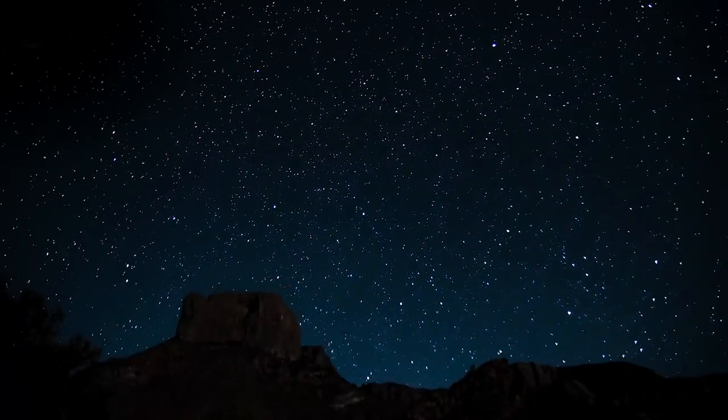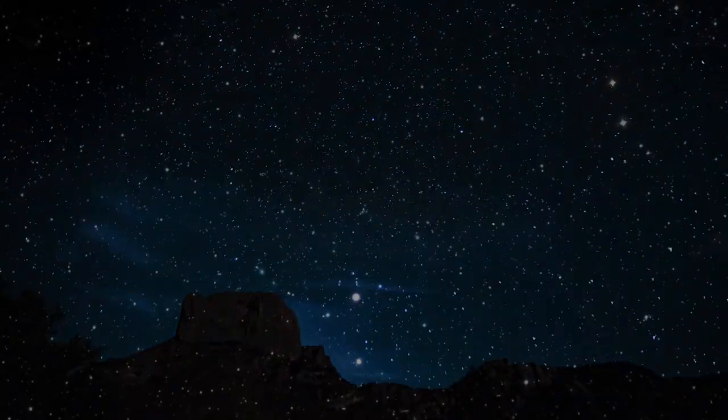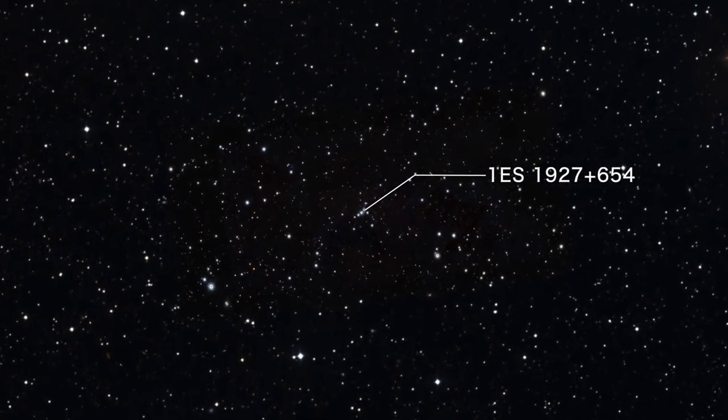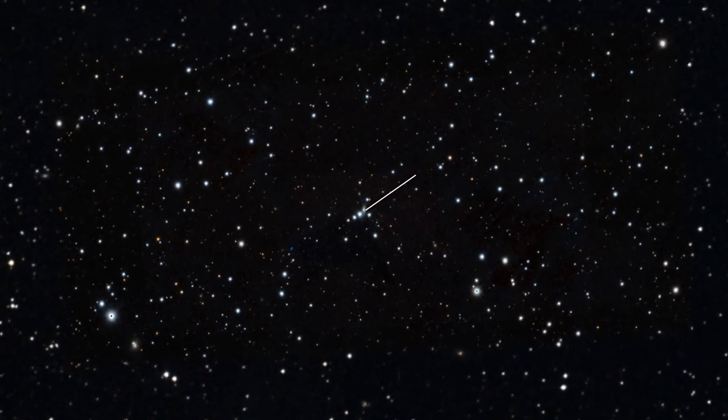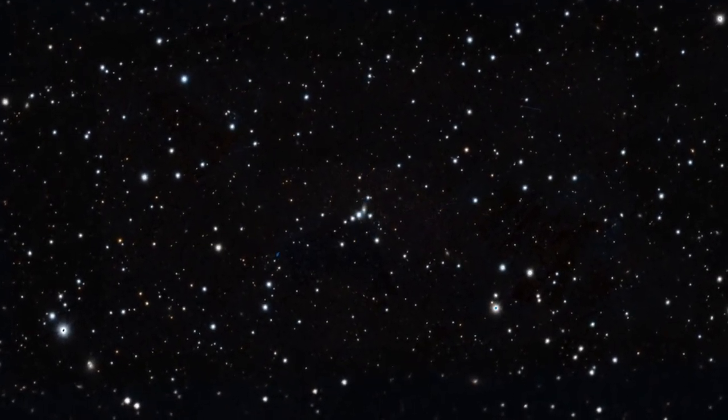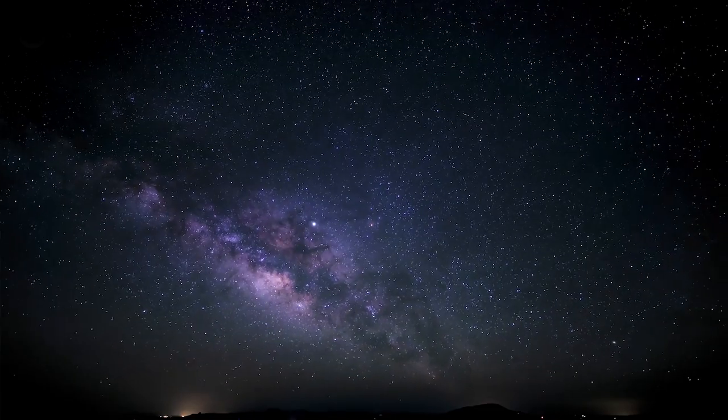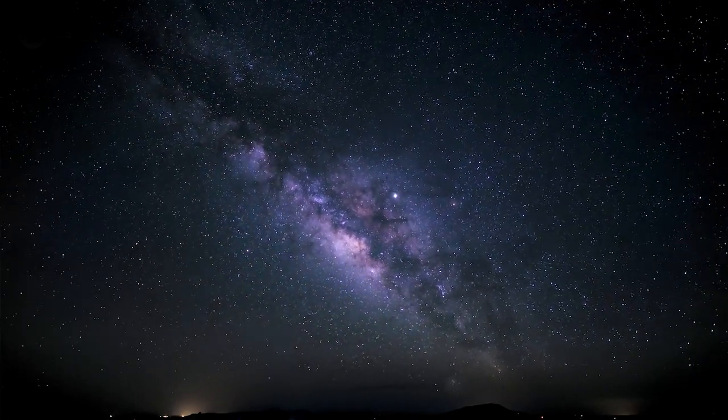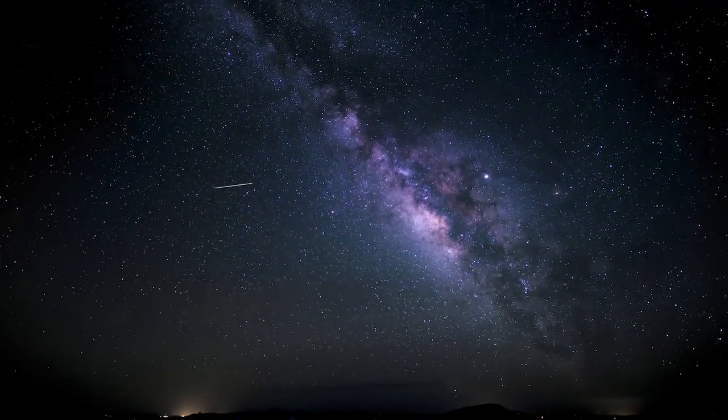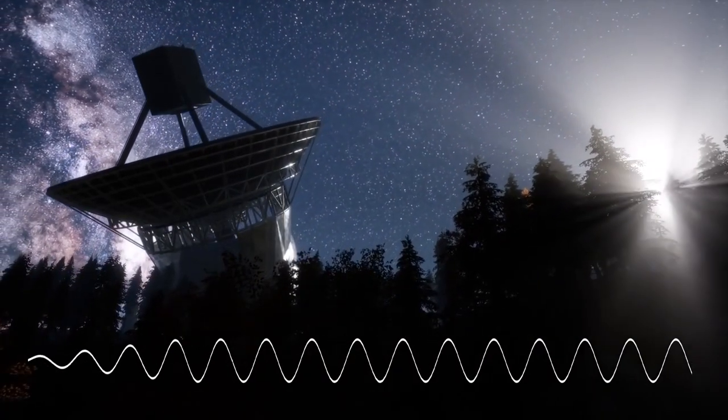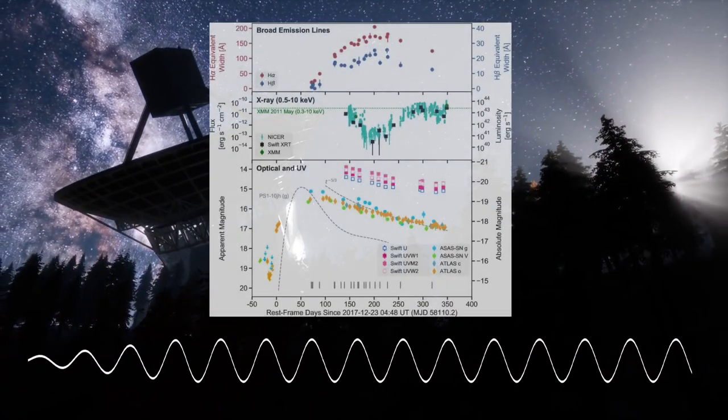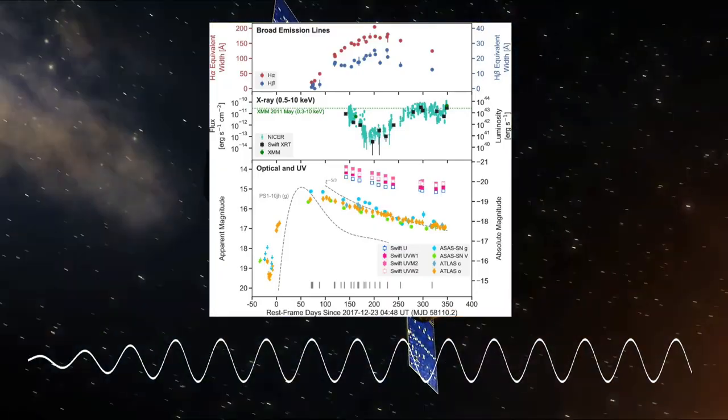In the galaxy known as 1ES1927 plus 654, 236 million light-years away, a rare and enigmatic emittance of energy was recently detected. All of a sudden, the X-rays they had been recording from the galaxy completely disappeared.